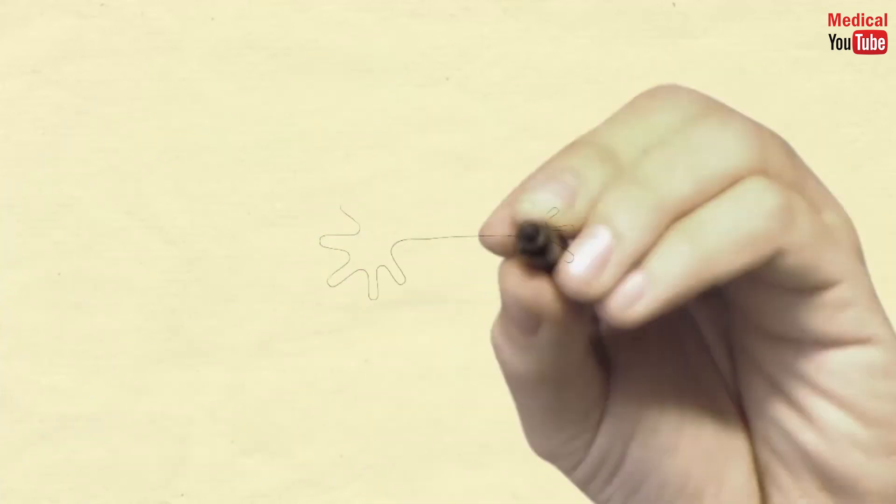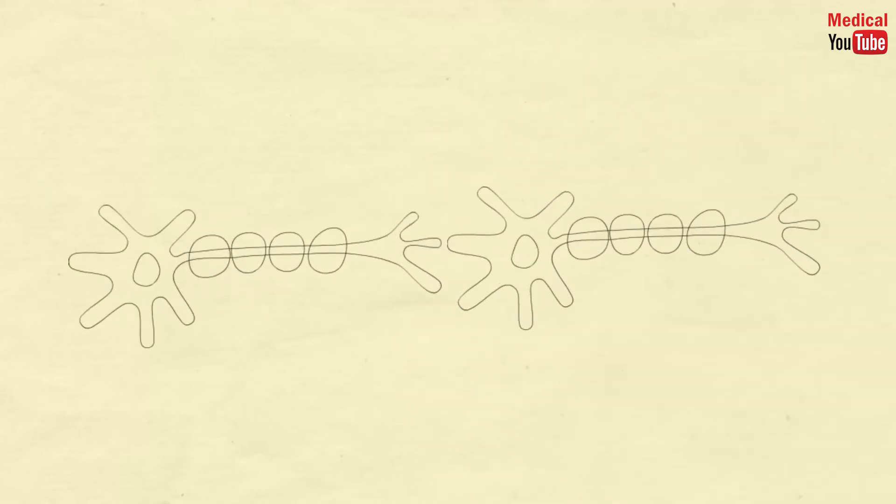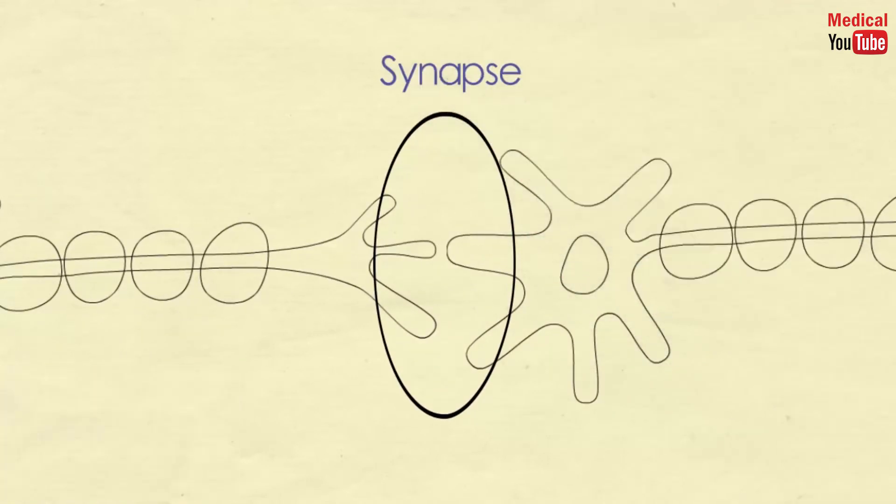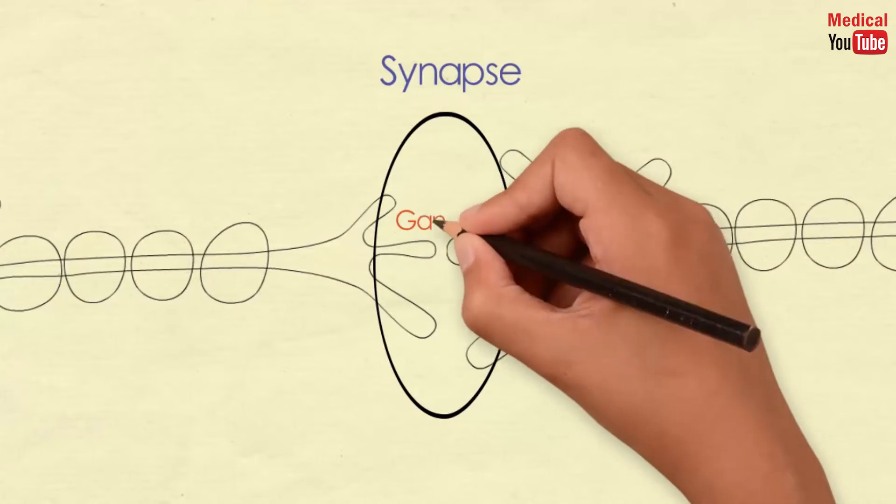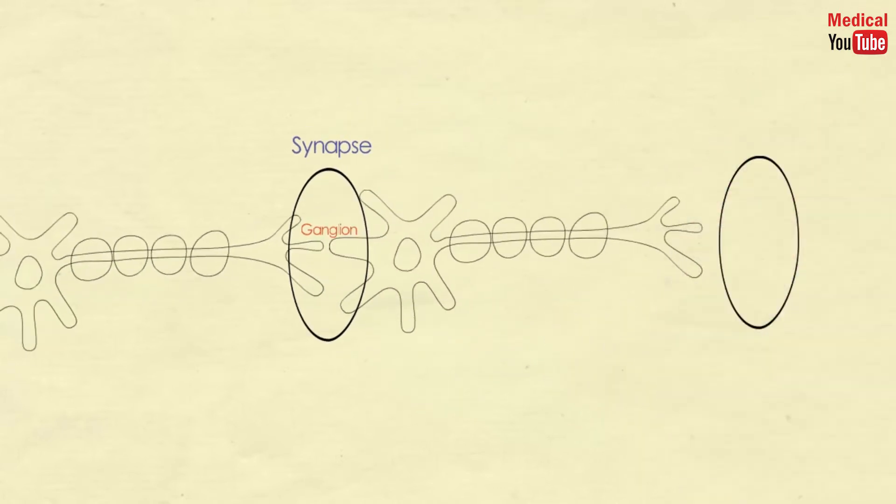That takes us to some terms you should know. The neuron or nerve cell is the building block of the nervous system. There is a video down in the description that will give you a brief intro about it. Synapse is the junction between two neurons, in this case it is called a ganglion, or it may be located between the neuron and the effector organ.